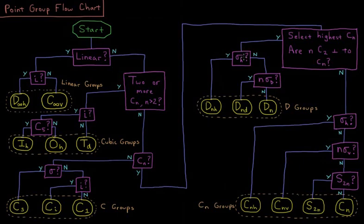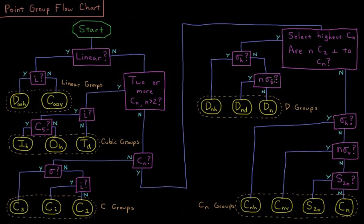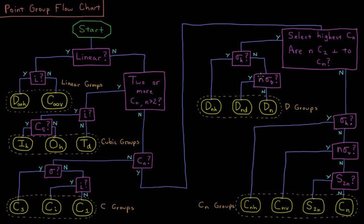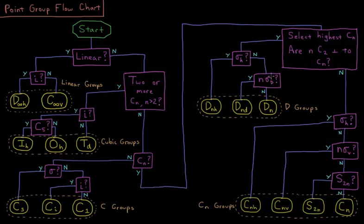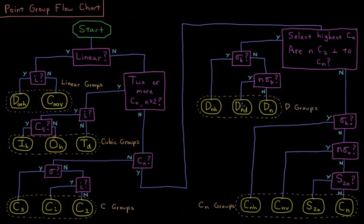If it doesn't have that sigma H, then we ask here, are there n mirror planes which are parallel to that principal axis? So if we have a C2, are there two parallel mirror planes? C3, are there three of them? C6, are there six of them? If there are things like staggered ethane, which would be D3D, then we have this there. If there are not, then it's just Dn.